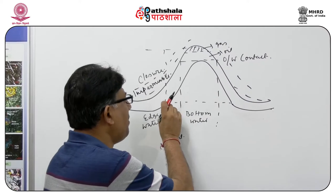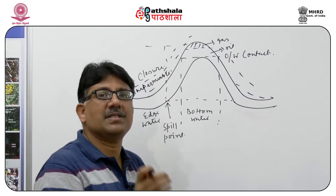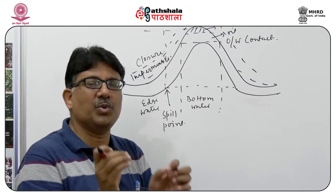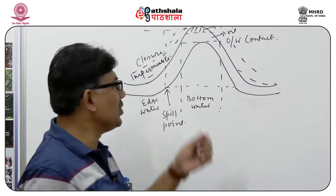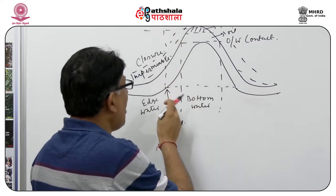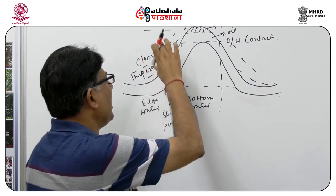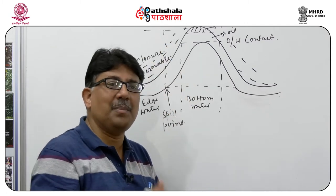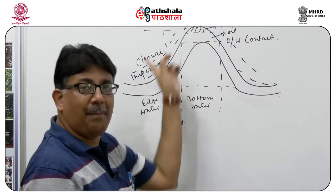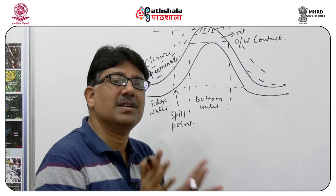The spill plane is essentially the lowermost structural level up to which the hydrocarbons can occupy space within an antiformal trap. The highest point of the antiform — its height from the spill point — is called the closure of the structure. That is what we call the entire closure which is available for becoming a trap, provided it has reservoir quality, there is a cap rock, and we have a source rock from where the hydrocarbon is being supplied.